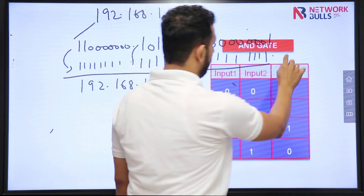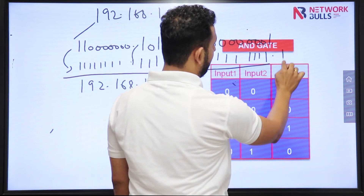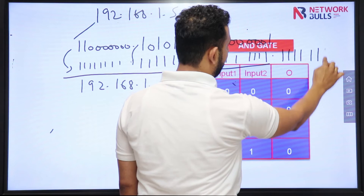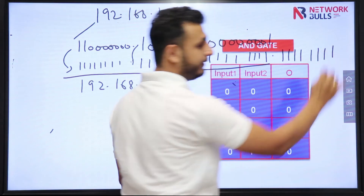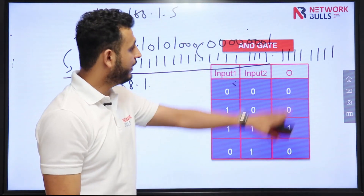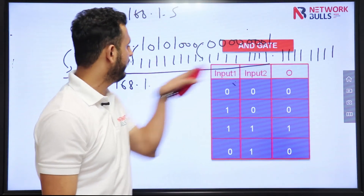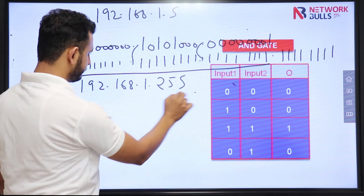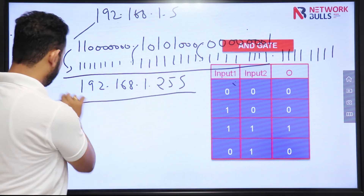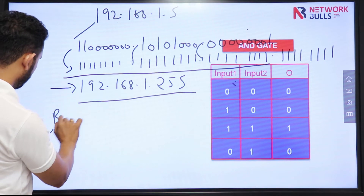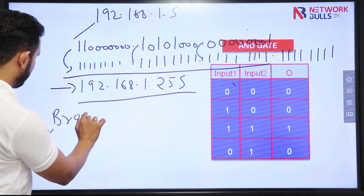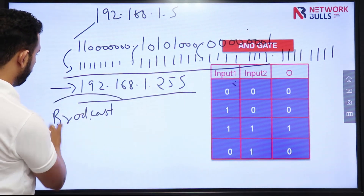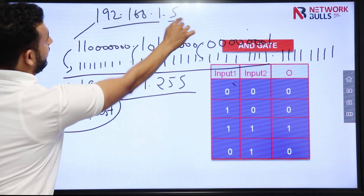How many host bits do I have? 8 host bits. So I turn all 8 host bits to 1. Converting 11111111 to decimal gives 255. So the broadcast ID for this particular IP is 192.168.1.255.